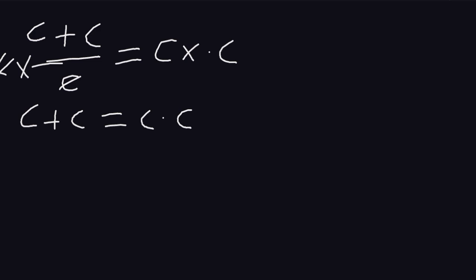This one and this one will cancel. We're left with c plus c is equal to c multiplied by c. This is the same as c plus c, which is 2c, is equal to c squared.